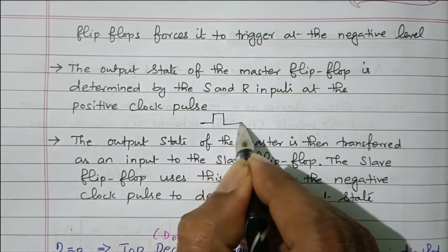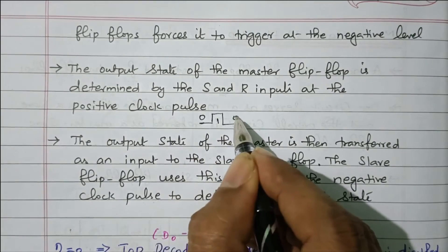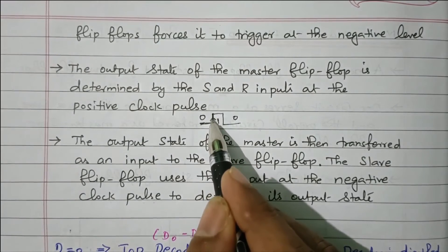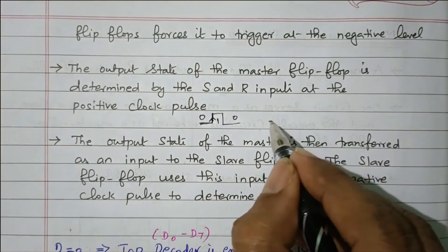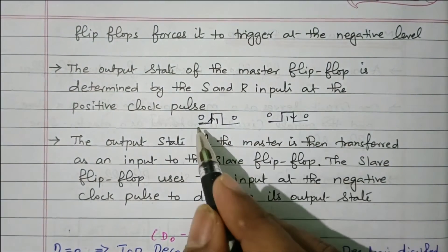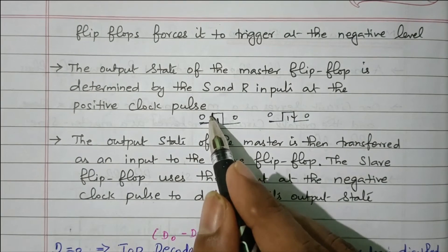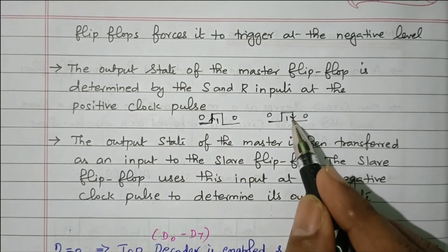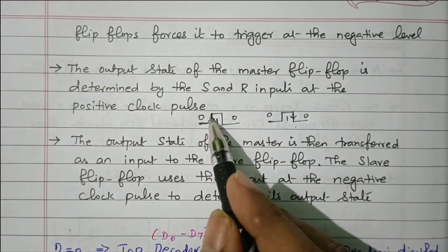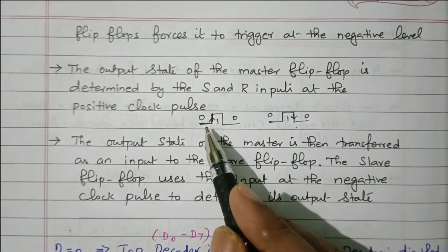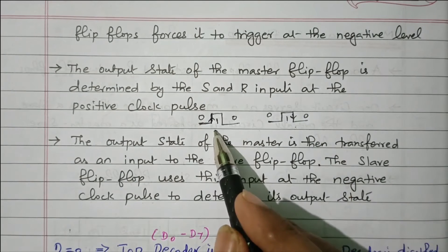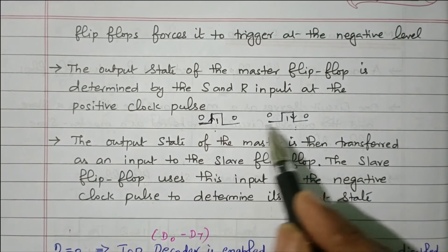The slave is triggered at the negative clock pulse. Let's understand positive edge and negative edge. Consider the clock pulse going 0, 1, 0. The transition from 0 to 1 is the positive edge — the rising edge or positive triggering. The transition from 1 to 0 is the negative edge — the falling edge, negative triggering. Every rising edge, the master is triggered. Every falling edge, the slave is triggered. The master flip-flop is triggered at the positive edge; the slave flip-flop is triggered at the negative edge.